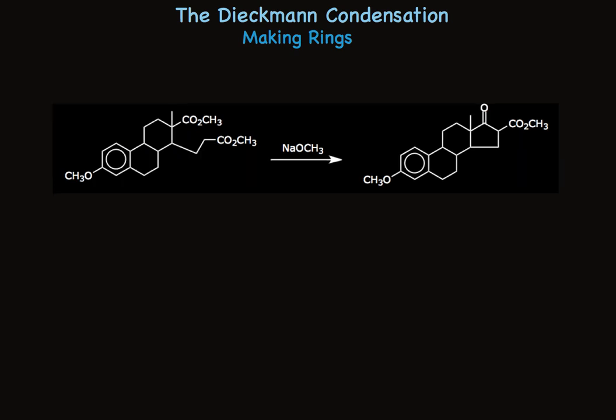Later in the synthesis, ring D was formed. The alpha hydrogen was abstracted at this carbon, it adds to the ester group right above it, and makes a five-membered ring this time, not a six. We have a cyclopentanone with an ester group at the alpha carbon. In a few short steps, this tetracyclic compound was converted to estrone — a very elegant synthesis and an insightful way of using the Dieckmann condensation.